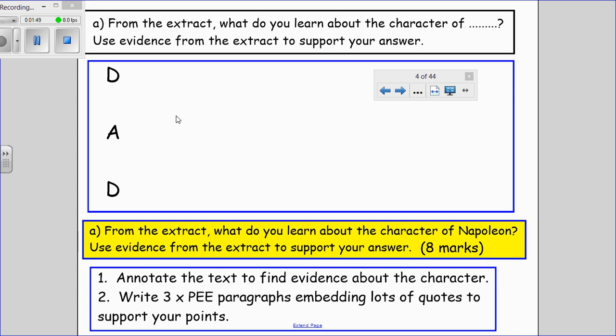You can use the acronym DAD to help you find things about the character in the extract. Think about DAD as description—what the character might look like or how the character is described—action, what the character does or says for the dialogue, and what other people say about them.